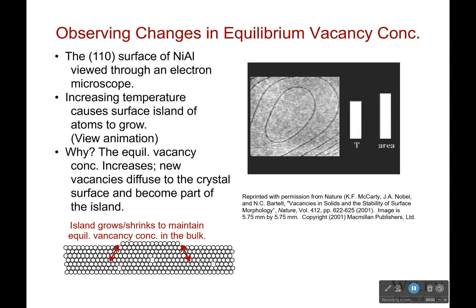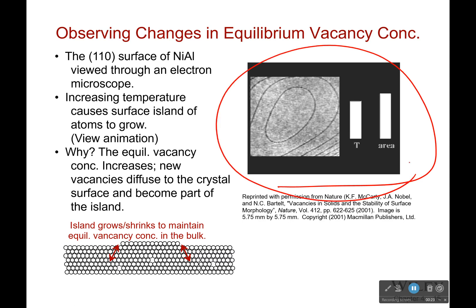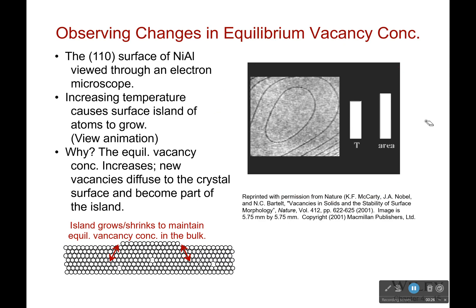I wanted to show you a little gif of what I mentioned earlier — that vacancies happen because atoms are moving, and where do they move? They typically move to the surface of a particular crystal or metal. Over here I have a little video of the surface of a nickel-aluminum alloy viewed through an electron microscope. This is the 1-1-0 surface, which does matter when looking at this particular shape.